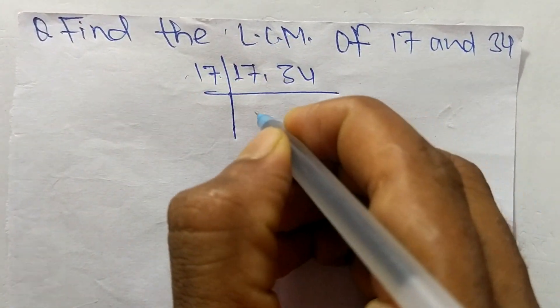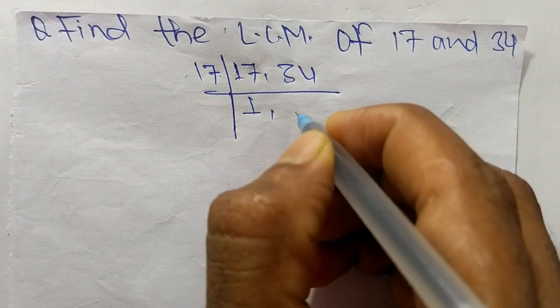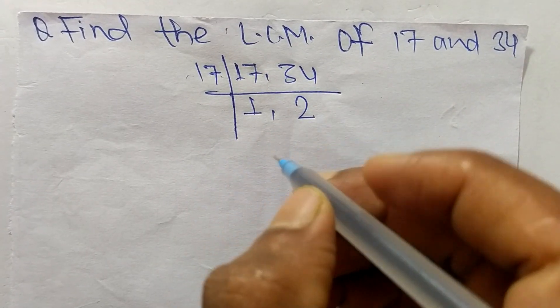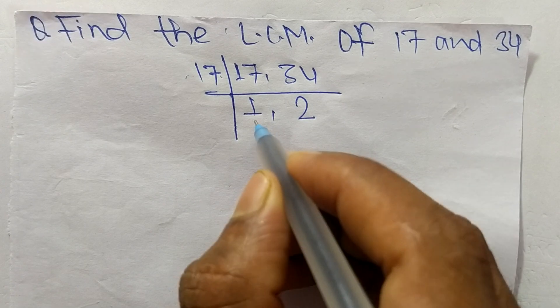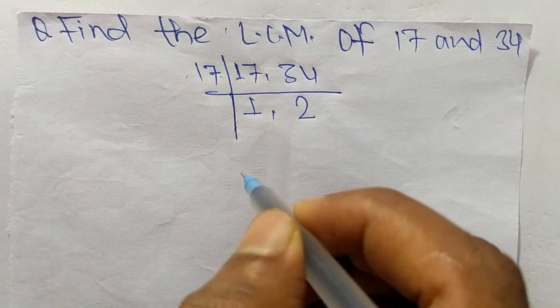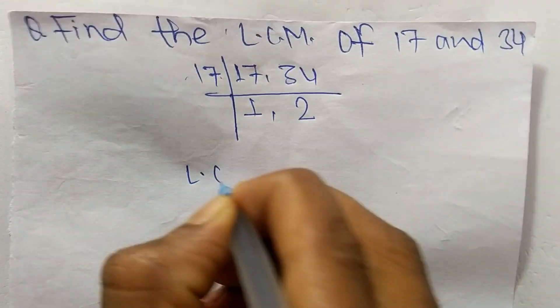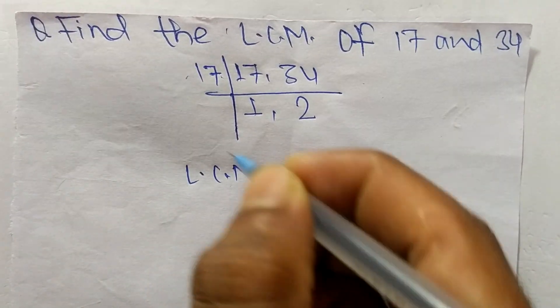17 times 1 means it is 17. 17 times 2 means it is 34. So at last we have here 1 and 2 which are not exactly divisible by the same number. So its LCM is equal to,